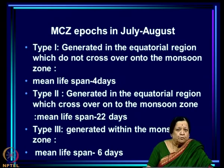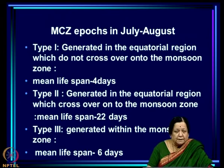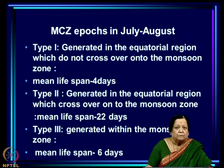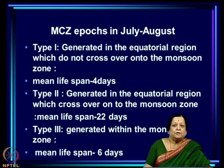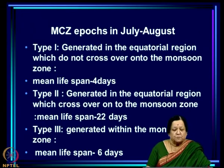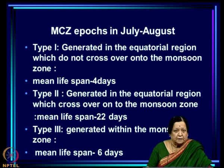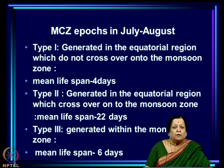Type 2 are the most interesting epochs — these are the ones generated over the equatorial region which cross over onto the monsoon zone. These are the northward propagating episodes or epochs.